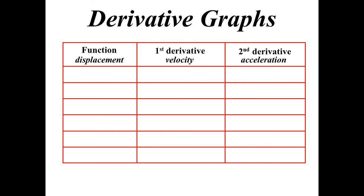For our purposes, displacement is like x — our function — the first derivative is velocity, the second derivative is acceleration. If we have a stationary point on the displacement graph, that means we must have an x-intercept on the velocity graph, because the first derivative would be equal to 0.